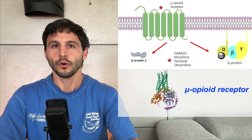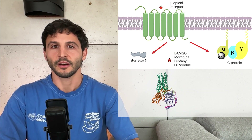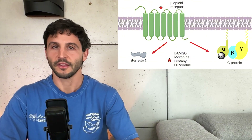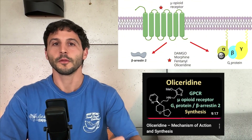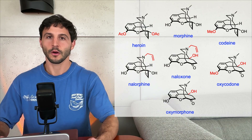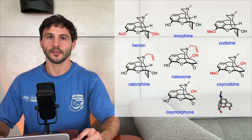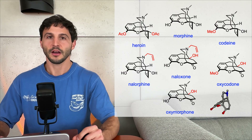Morphine works by activating the mu-opioid receptor. When the receptor is turned on, it triggers a number of downstream signaling events that ultimately result in potent analgesia. For more details about the mechanism of action, check out the video about oliceridine. For almost 200 years, chemists have been tweaking morphine and related molecules trying to make them safer or more effective. Most of these efforts focus on changing small parts of the structure — the outer groups, or what we call the periphery of the molecule.